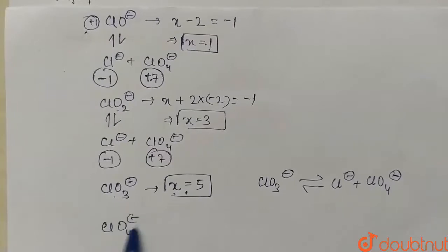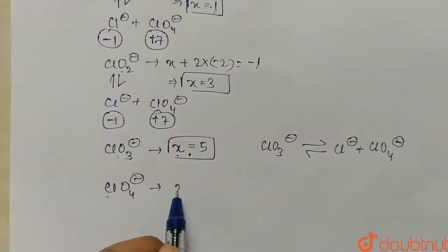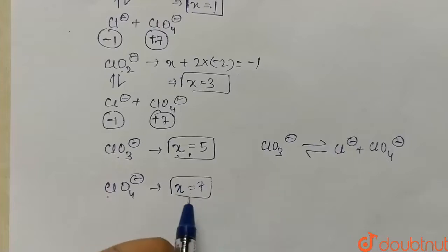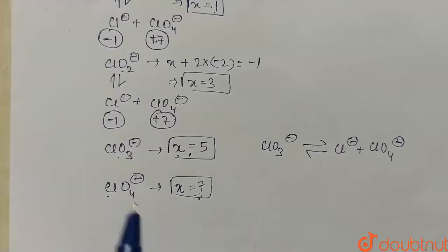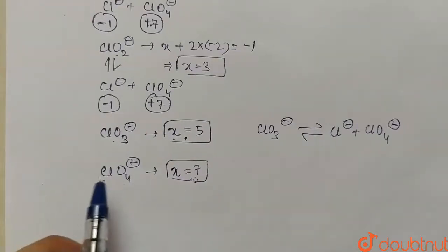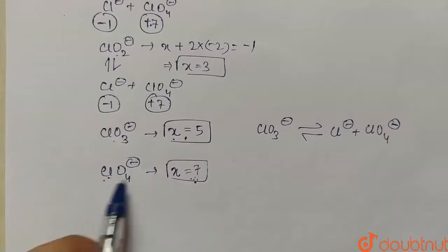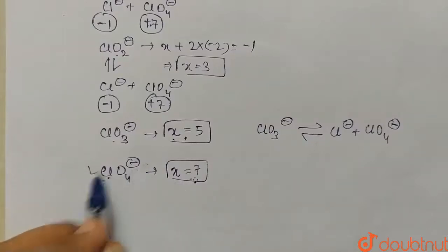Last, we have ClO₄⁻. If we calculate the oxidation number of chlorine, the oxidation state comes out to be plus seven. This plus seven oxidation state is the highest oxidation state of chlorine. Since it is the highest oxidation state, ClO₄⁻ will not disproportionate. This is our answer.